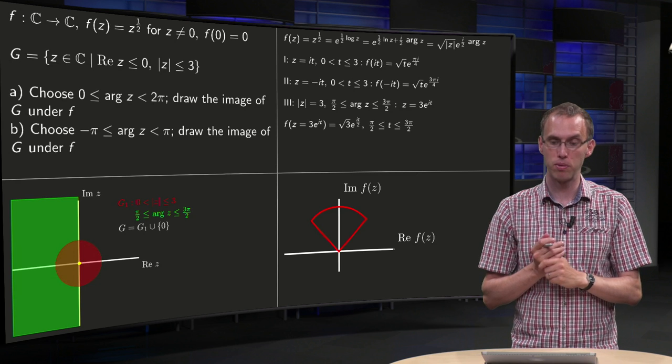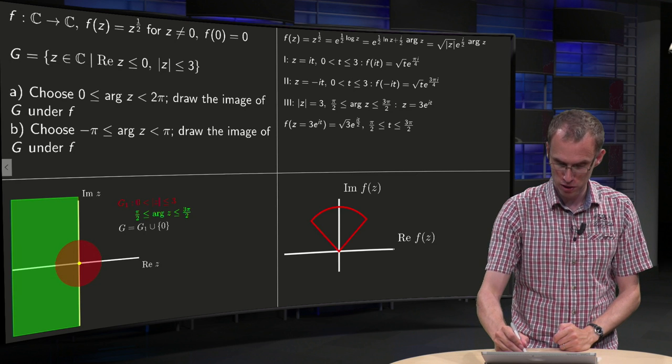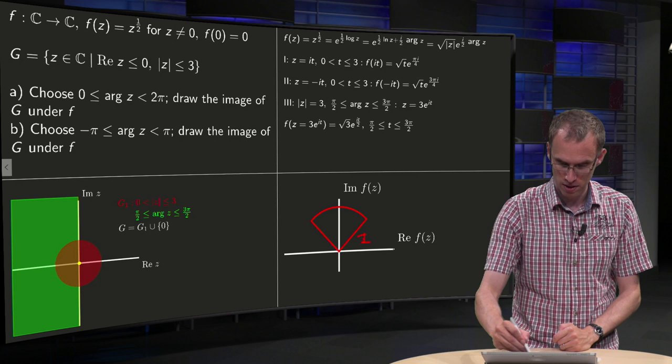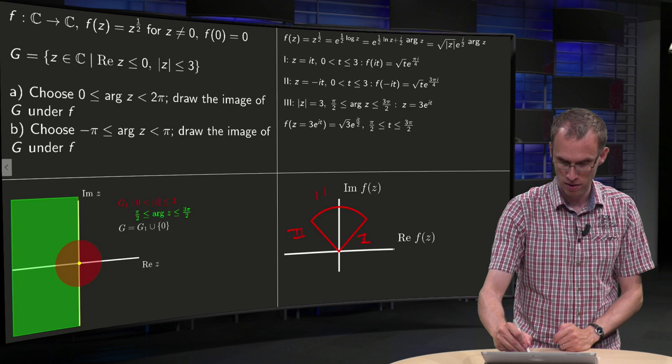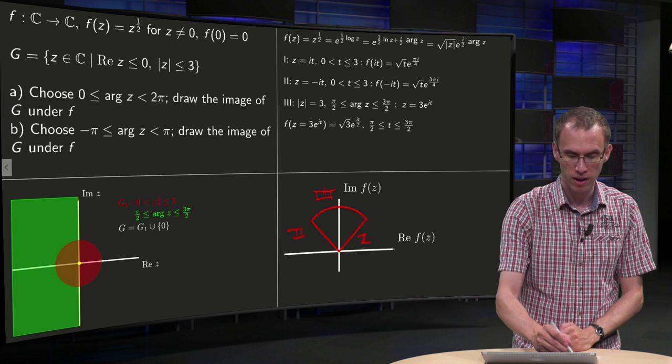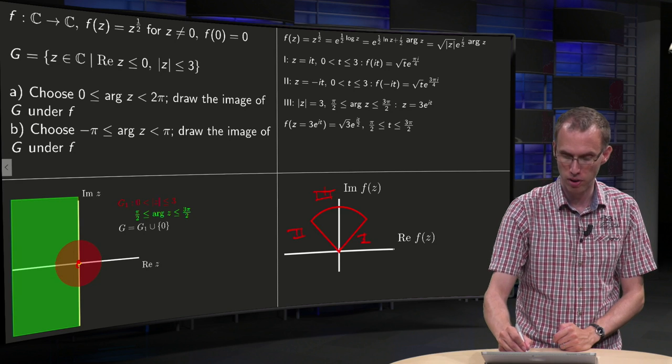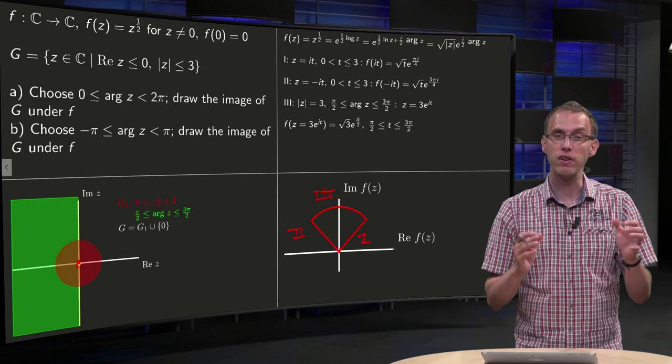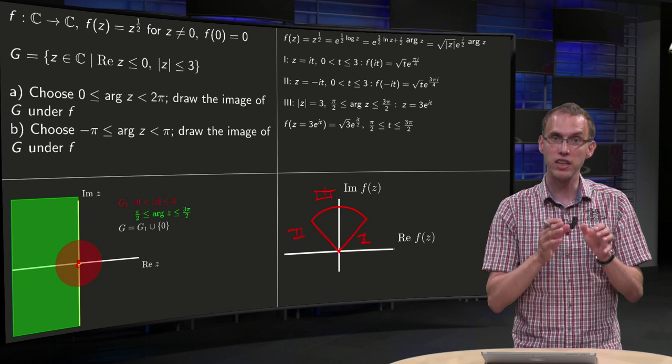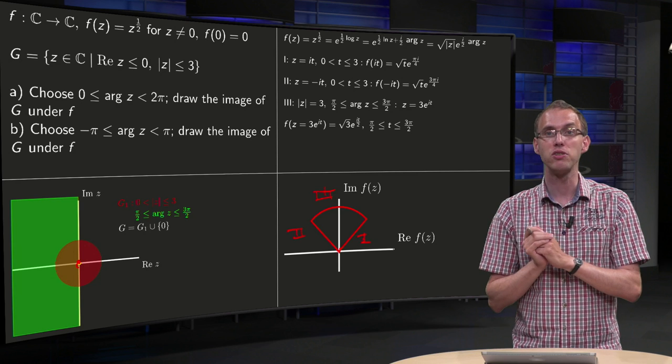And now we combine everything, the first part over here, second part over here, third part over here, and the origin maps to the origin. And question, does our region map inside or outside the ice cone?